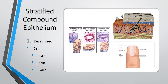The first type of stratified compound epithelium is keratinised. Keratin adds strength and colour. The places we find keratinised compound epithelium are dry places like the hair, the skin and the nails. The keratin protects these parts of the body, and it is dry.